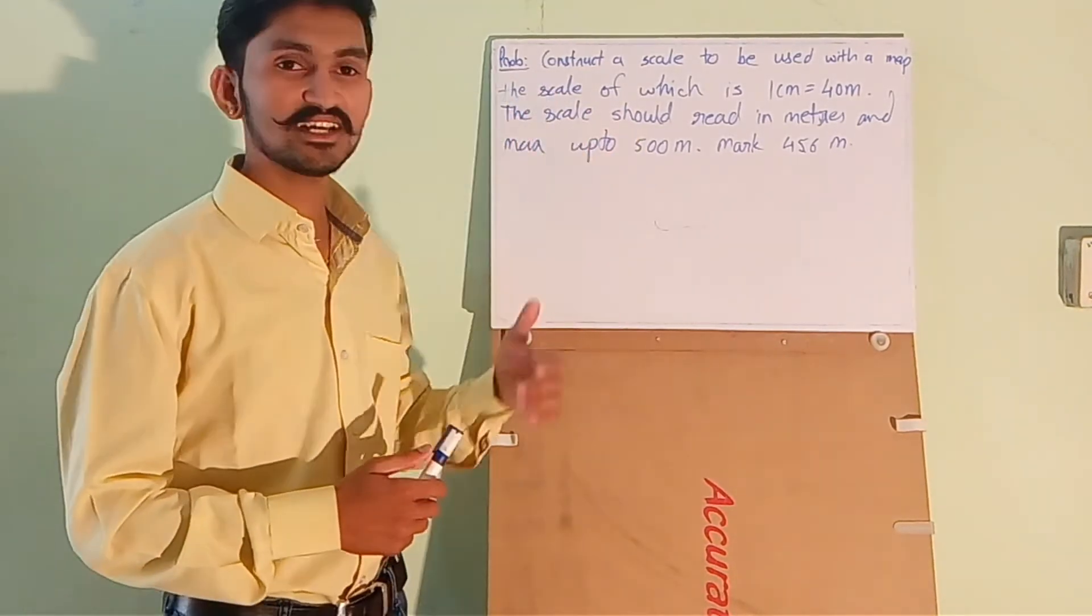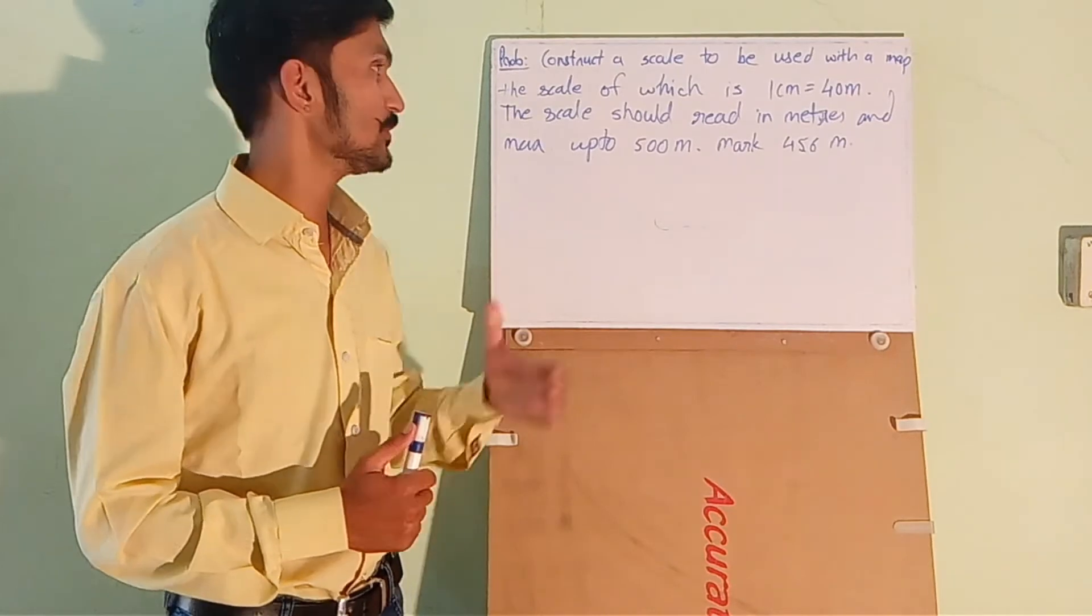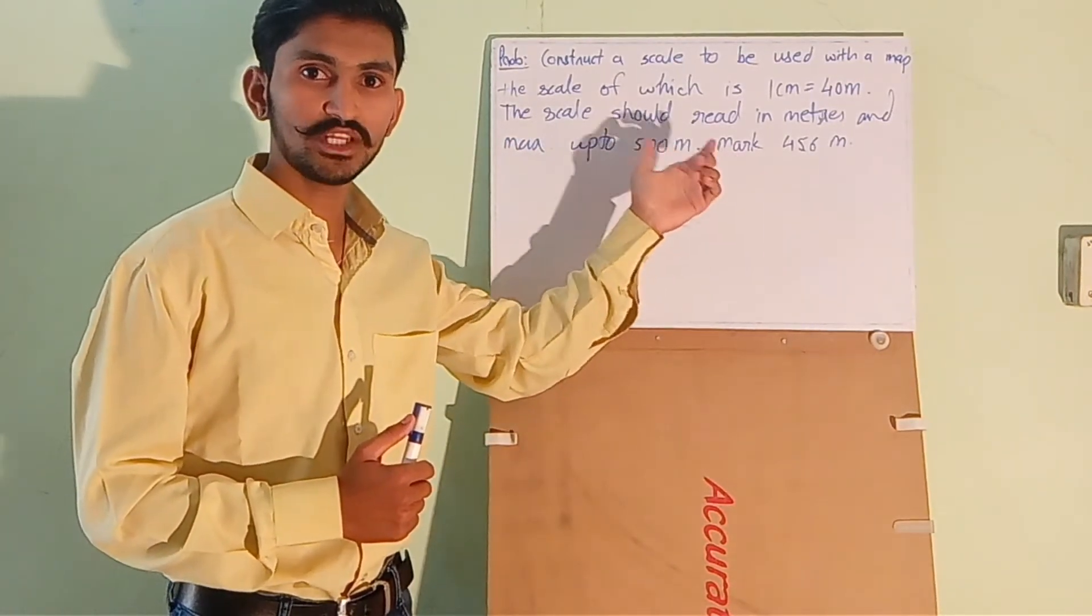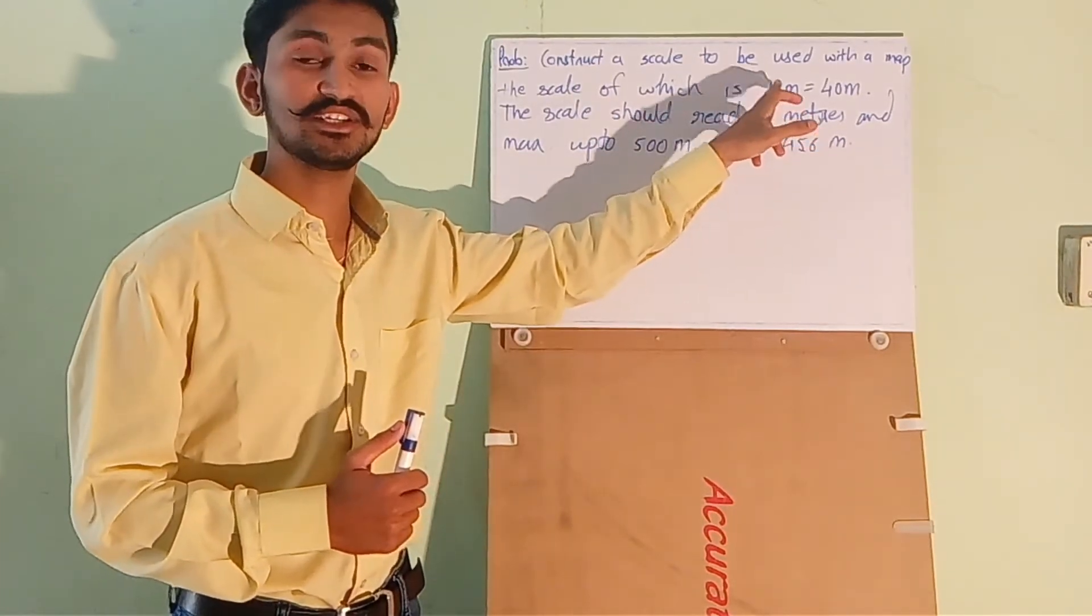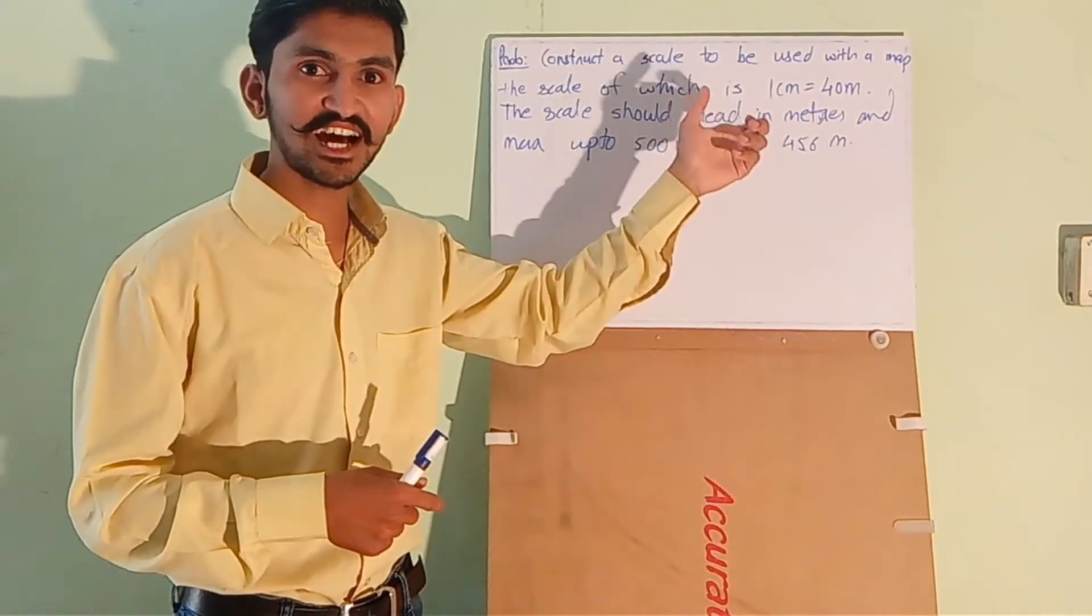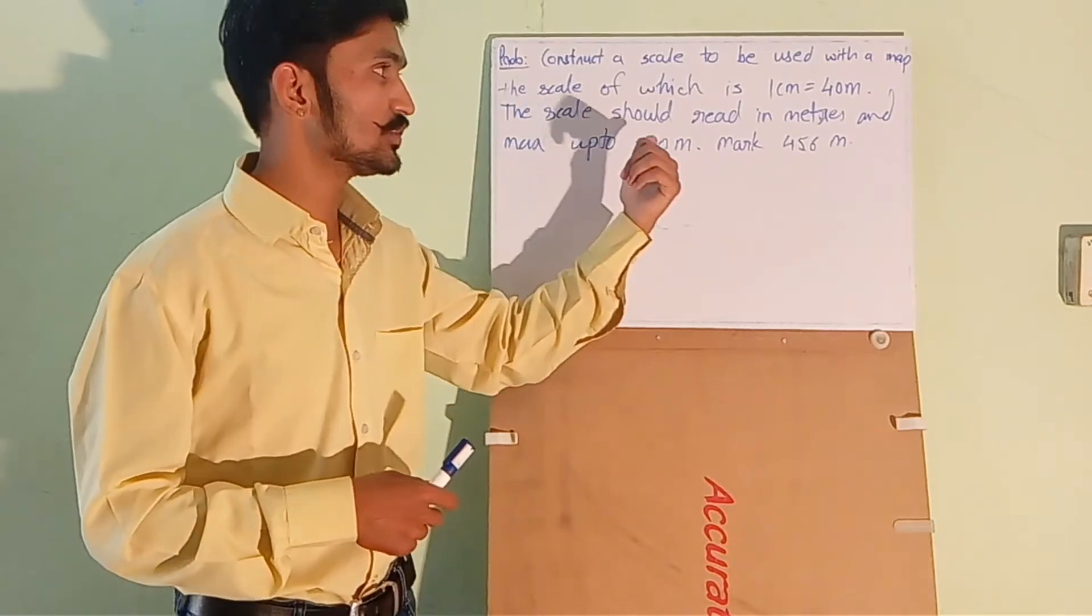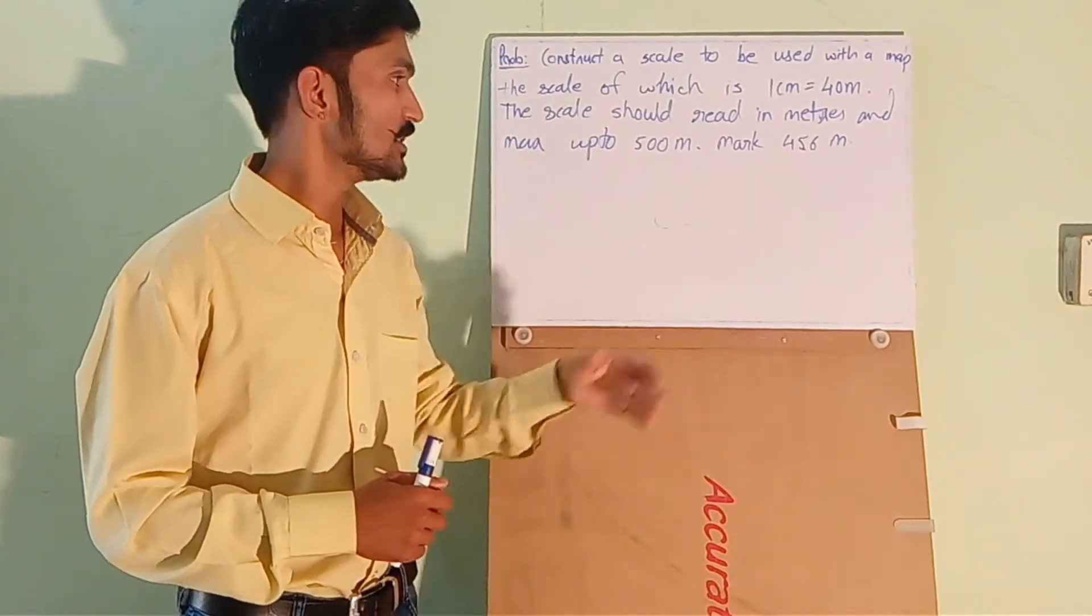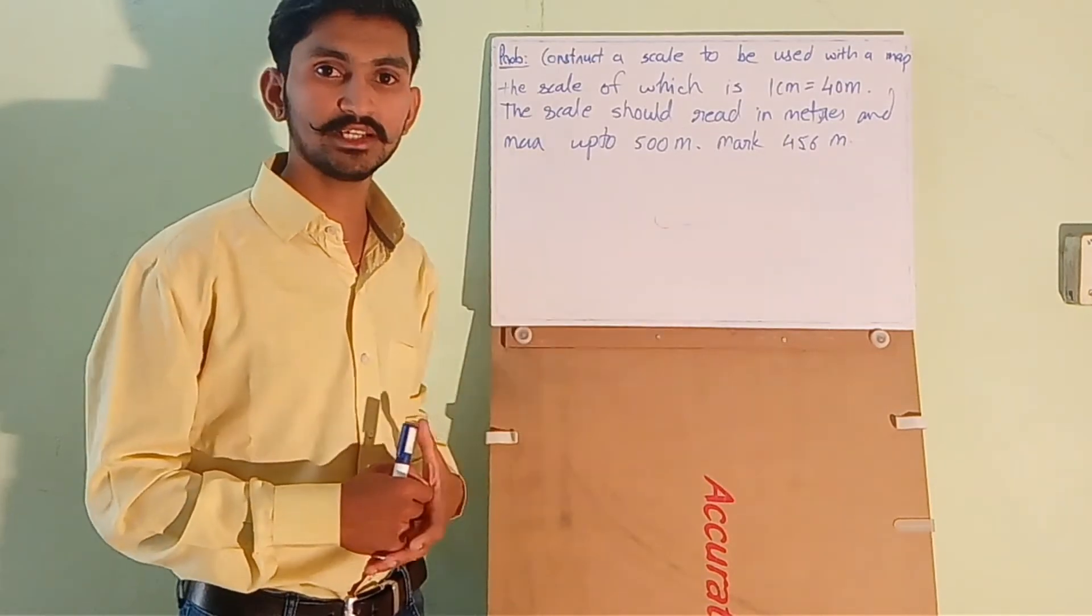So the question is construct a scale to be used with the scale of which is one centimeter equals to 40 meter. The scale should read in meters and maximum up to 500 meters. Mark 456 meter on it.